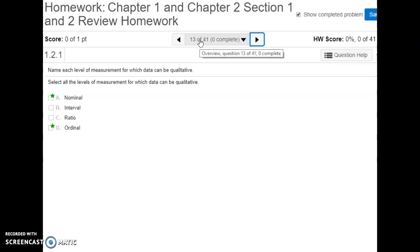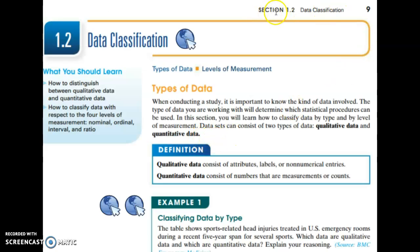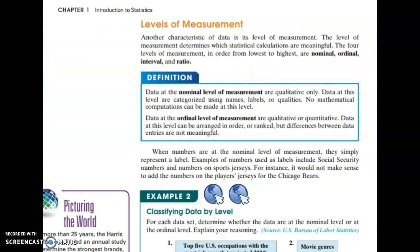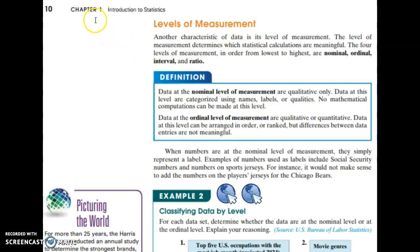Number thirteen, we're into section 1.2, and we're going to select all the levels of measurement for which data can be qualitative. In section 1.2, it defines qualitative and quantitative data. Qualitative is talking about a quality, an attribute, a label — something non-numerical. Quantitative data consists of quantities and numbers that we can measure and count. Whenever we gather data in statistics, we can talk about whether we've gathered numerical quantitative data, or if it's just attributes and labels and it's qualitative.